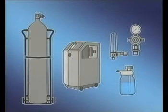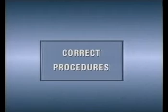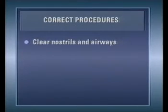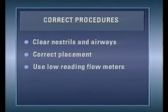These problems can be avoided or overcome by using the recommended equipment and following the correct procedures shown in this video. First, keep the child's nostrils and airways clear of mucus. Ensure that prongs and catheters are placed correctly. Use low reading flow meters to reduce the risk of gastric distension with the nasopharyngeal catheter.